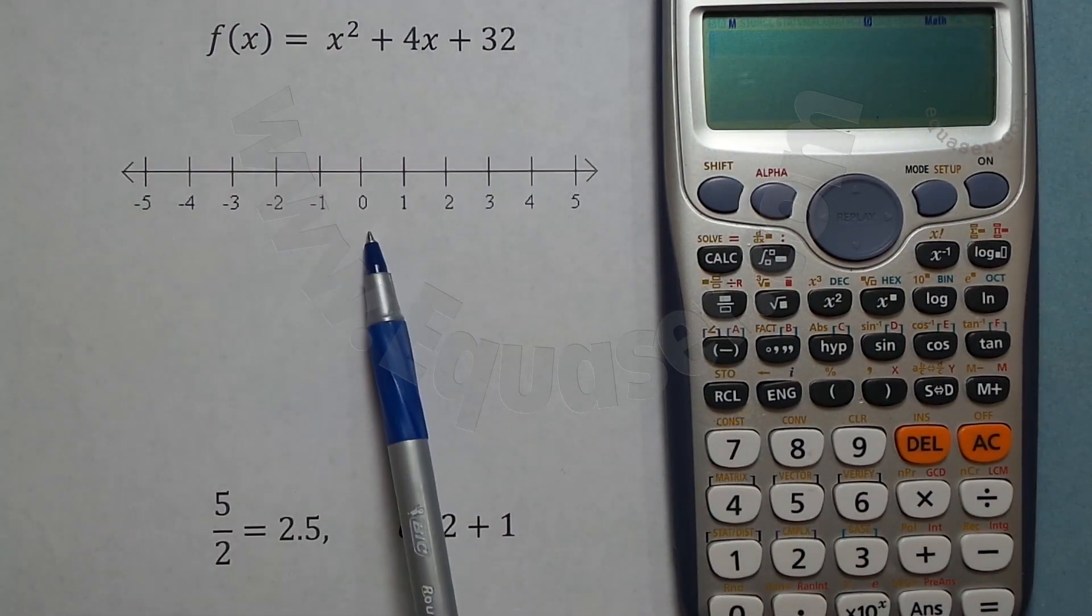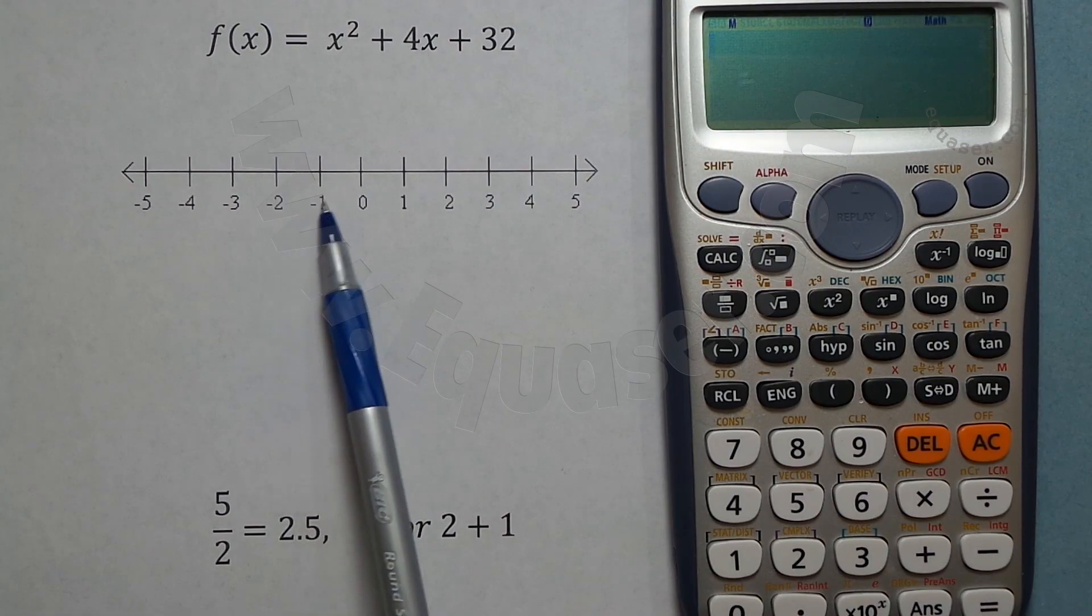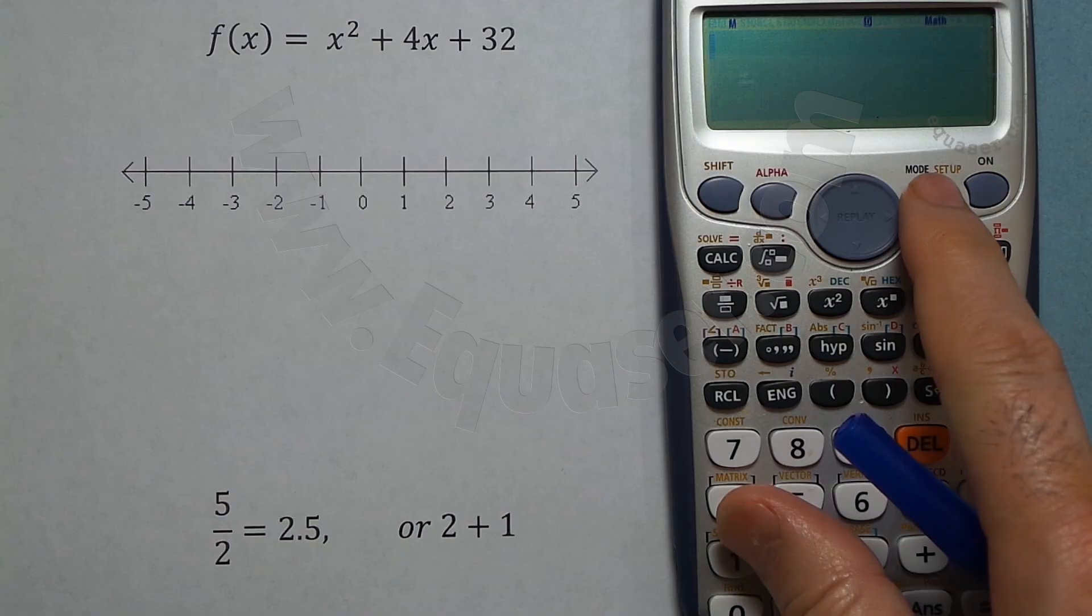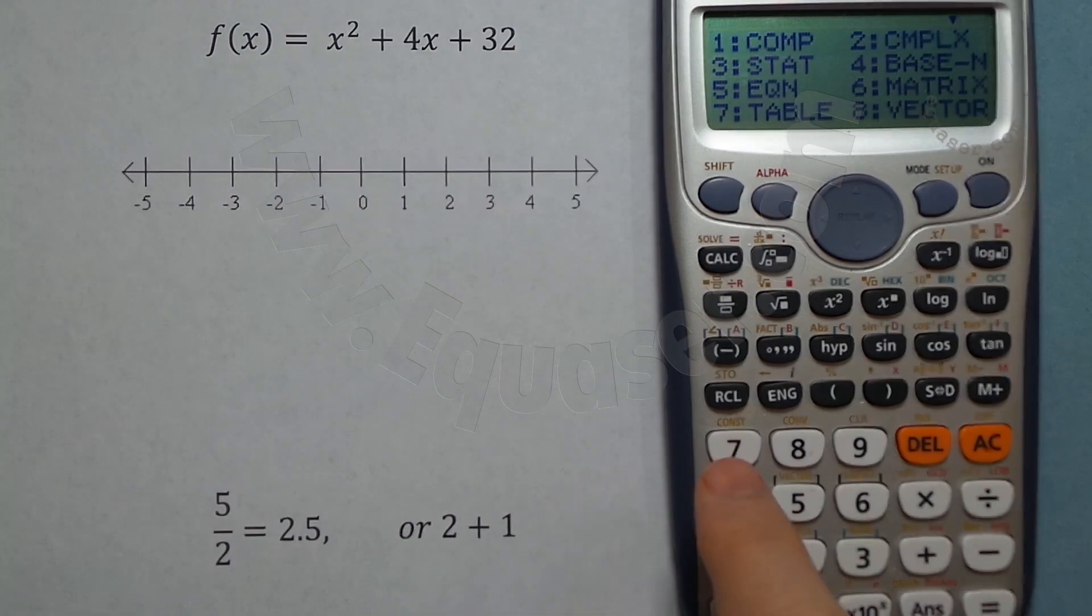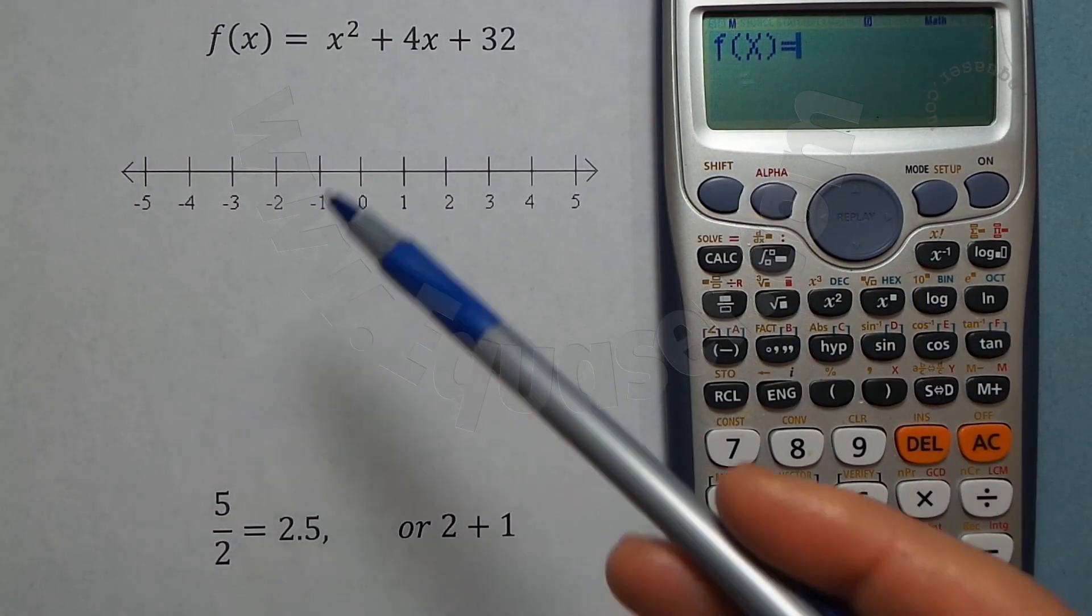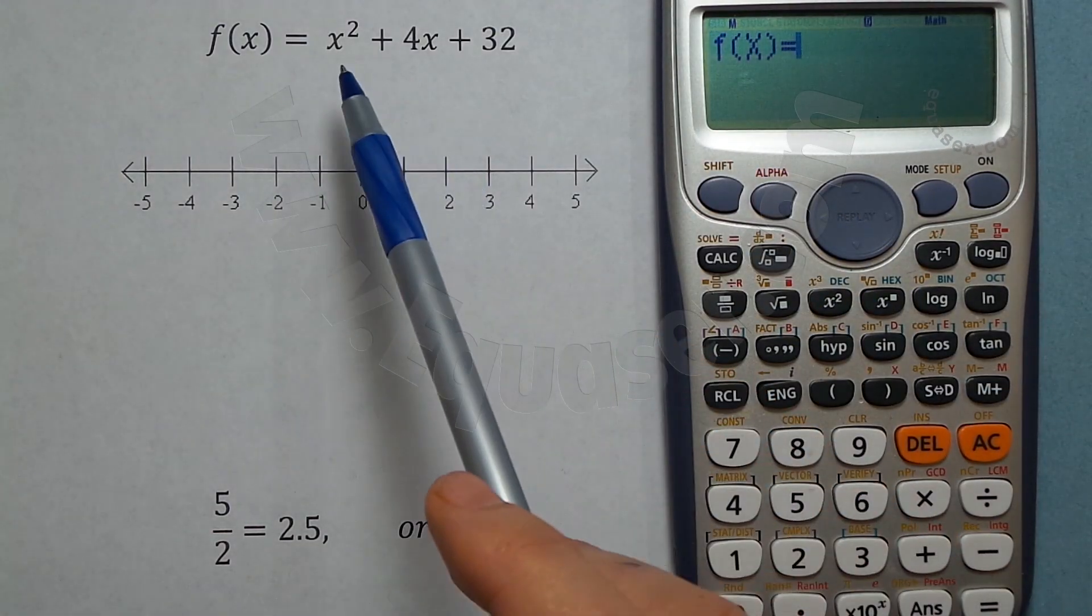So let's do that. Press the mode button and then select number 7. Now f(x) is on the screen. To enter x, y, and other values - x is here, y is here, and other values all in red color.